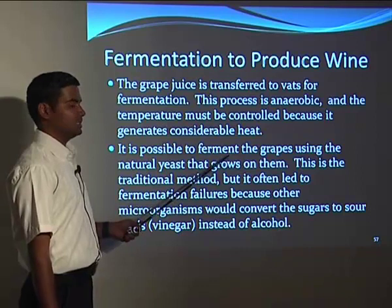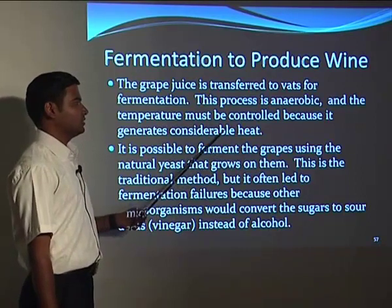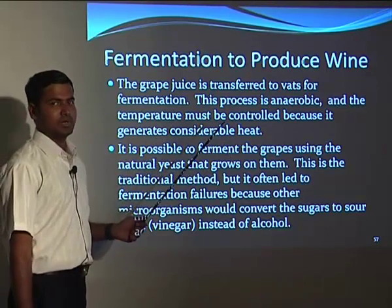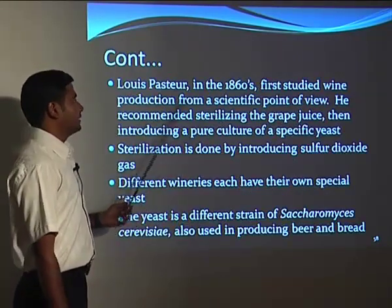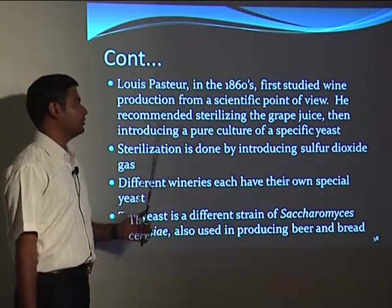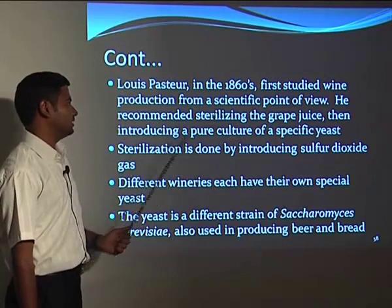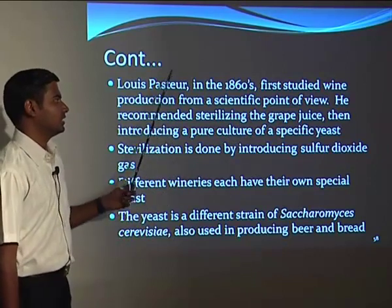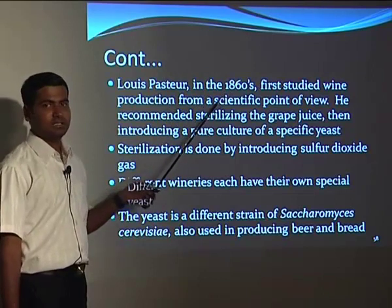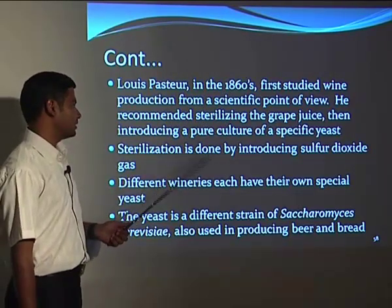Contamination by foreign bacteria may occur and lead to a souring taste. The fermentation must be very well monitored and the heat generated in wine production must be properly removed. Louis Pasteur first studied wine production from a scientific point of view and recommended sterilizing the grape juice first, then introducing a pure culture of a specific yeast. This approach addresses the souring problem and ensures alcohol production.